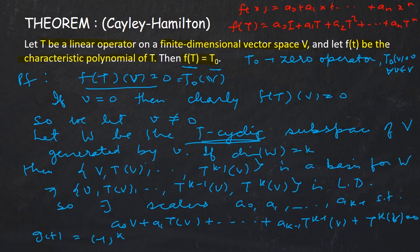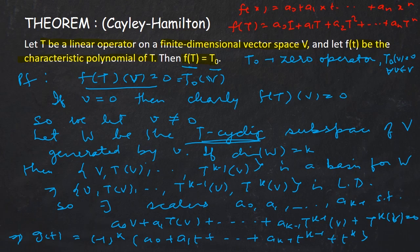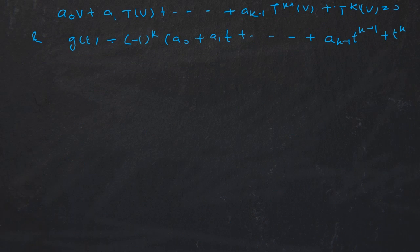By that theorem, g(t) = (−1)^k (a₀ + a₁t + … + a_(k−1)t^(k−1) + t^k) is the characteristic polynomial of T_W, the restriction of T to W. So we have two equations: the linear dependence relation, and g(t) as the characteristic polynomial of T_W.